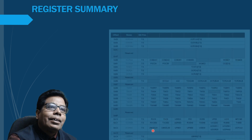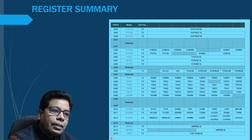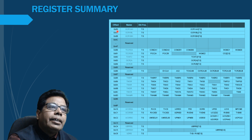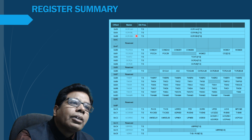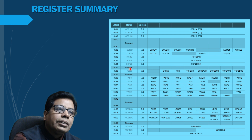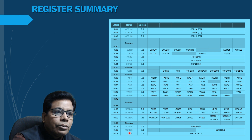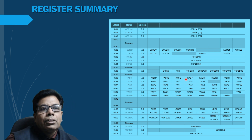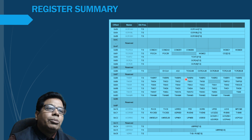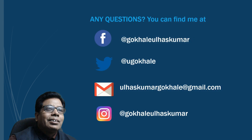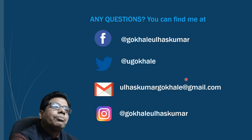Continuing through the register summary, the addresses change as we go further. We have SPL and SPH (stack pointer registers), watchdog timer registers, clock-related registers, then ADCL and ADCH (ADC data registers), and further data direction registers. The summary also shows the bit addressability of those registers. This covers addresses up to 0x6C, with registers such as TCCR2A and TCCR2B also present.